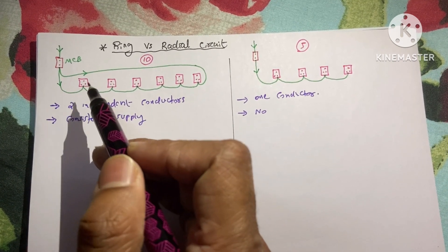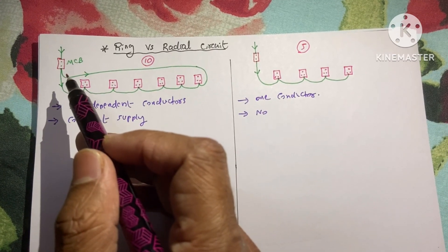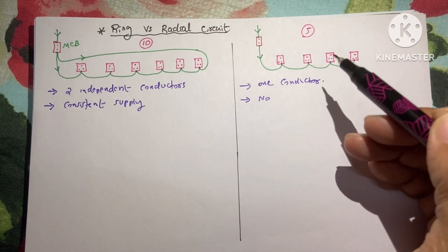One wire is connected to the first socket then second third likewise, but the second wire is directly connected to the last socket. And here is the radial circuit.